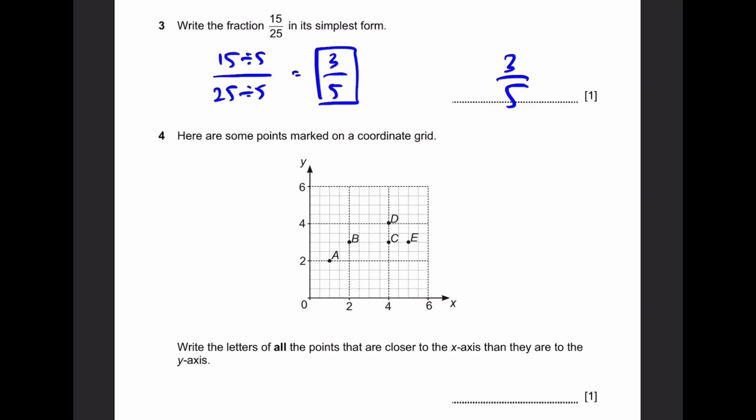Similarly for B, 3 units from the x-axis, 2 units from the y-axis. Doesn't count. C, 3 units from the x-axis and 4 units from the y-axis. So this counts. C is over here. Now, D, it's 4 units from both axes, so it's equal distance from both axes and it's not closer to the x-axis. That doesn't count. And as for E, it's 3 units from the x-axis and 5 units from the y-axis. So E counts. That's the answer.